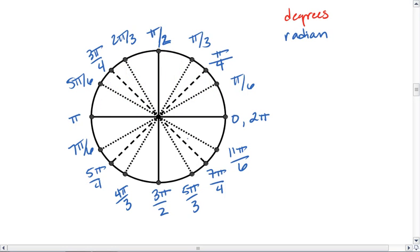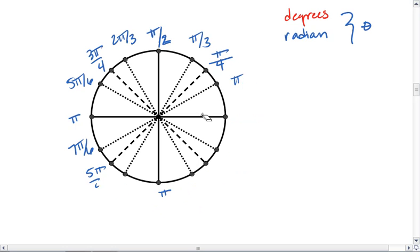And those are all of your radian measures. So now we've gone through all the possible angle measures. Now we're going to look at the values of sine and cosine.